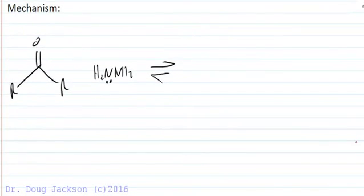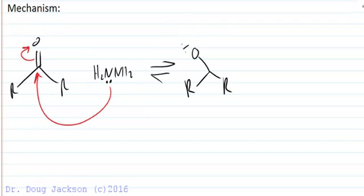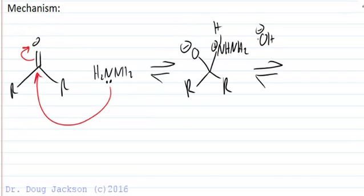So if we look at the mechanism, the attack to the carbonyl is the first step by hydrazine to form this intermediate whose proton, the extra proton on nitrogen, is quickly scavenged up by hydroxide to form this intermediate.